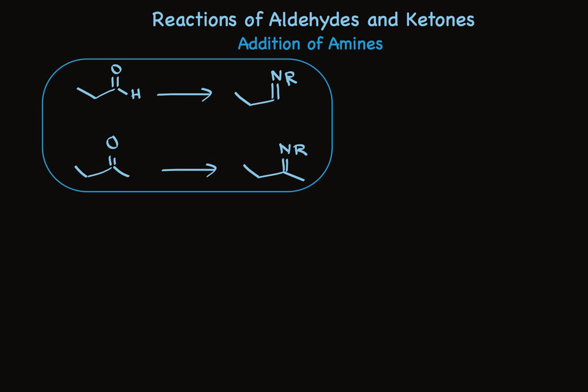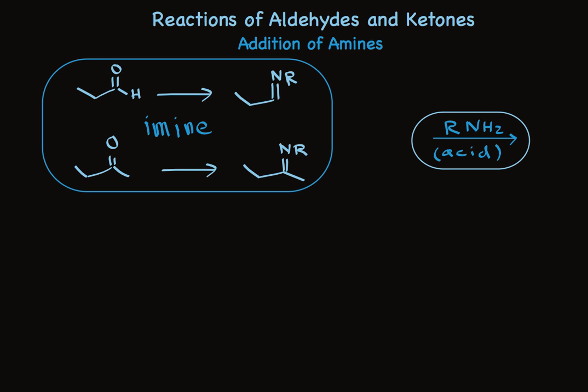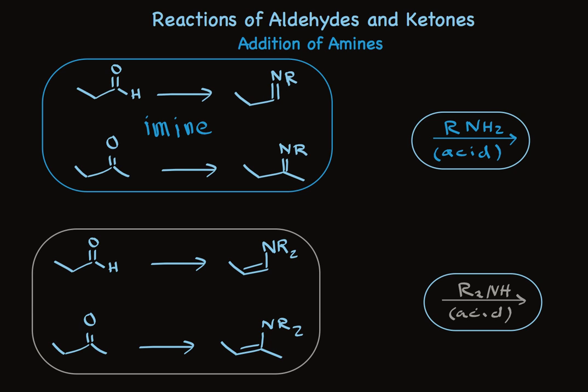Amines add to carbonyls, but the initial product immediately loses water, so we make a compound called an imine. To accomplish this, you simply use a primary amine, because we need to have two hydrogens on the nitrogen. An acid is typically used as a catalyst. On the other hand, if we use a secondary amine, where nitrogen only has one hydrogen attached, the initial product also loses water but in a different way. The product is an enamine, where you have a carbon-carbon double bond with nitrogen attached directly to it. It's called an enamine because it's an alkene that has an amine attached. Notice that the difference is that one uses a primary amine while the other uses a secondary amine. Both reactions are typically acid catalyzed.